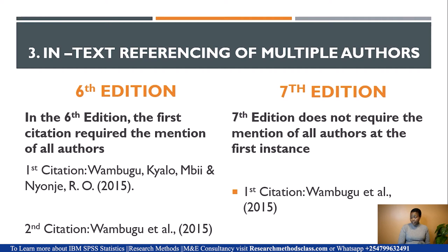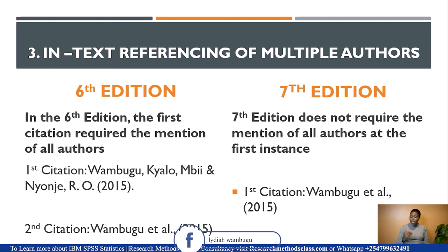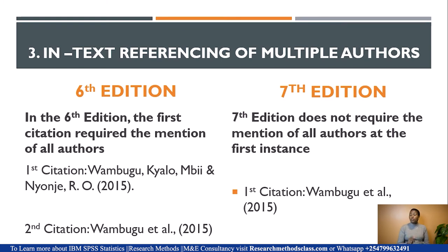Another difference is in-text referencing with multiple authors. In the 6th edition, you were required to cite all authors in the first mention, then use 'et al.' subsequently. For example, for a book by Wabogo, Chalo, B., and Nyoje (2015), the first citation needed all four authors. In the 7th edition, even at the first instance you simply write 'Wabogo et al.' followed by the year. Note there is a full stop after 'et al.' and then a comma before the year.